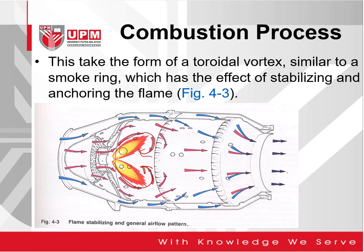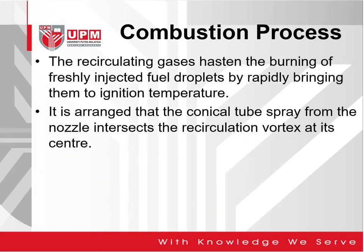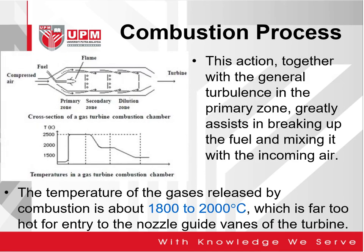You want to make sure the flame remains alive and is not extinguished. The recirculating gases aid the burning of freshly injected fuel droplets by rapidly bringing them to ignition temperature. It is arranged that the conical fuel spray from the nozzle intersects the recirculation vortex at its center. This action, together with the general turbulence in the primary zone, greatly assists in breaking up the fuel and mixing it with the incoming air.